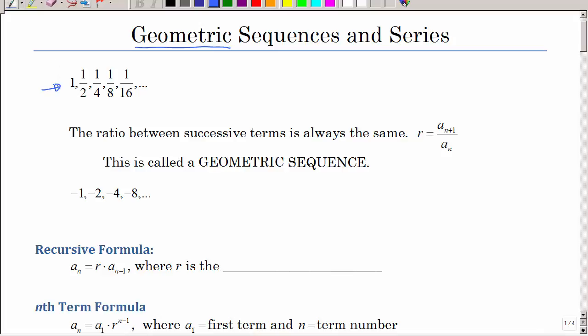Let's look at this first list of numbers. Can you establish the pattern? Seems like we're multiplying by one-half every time, so we could extend this on forever. This is a geometric sequence because the ratio between each term is always the same.